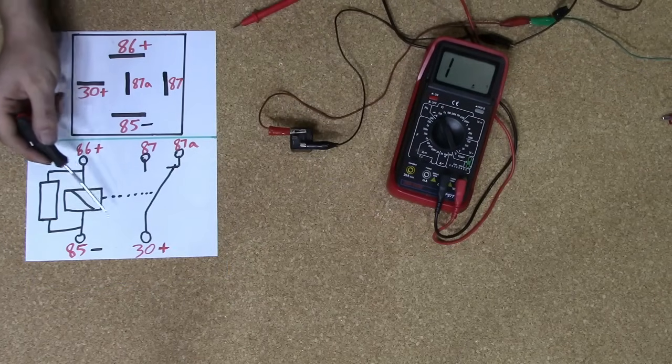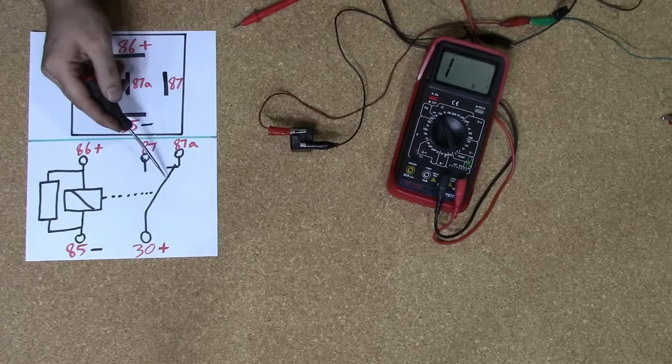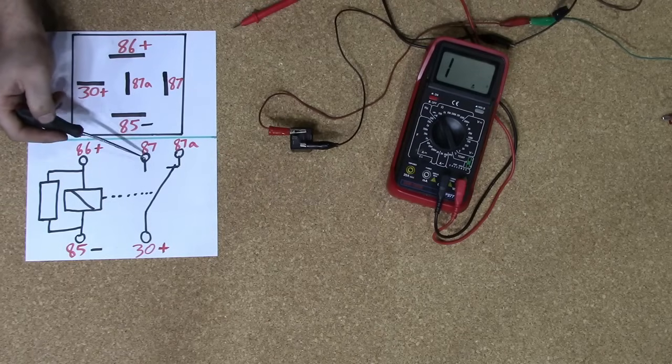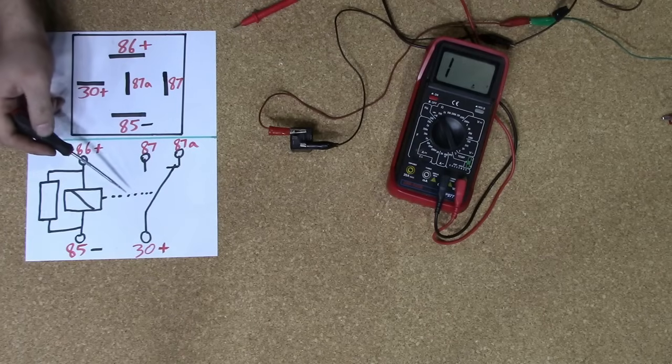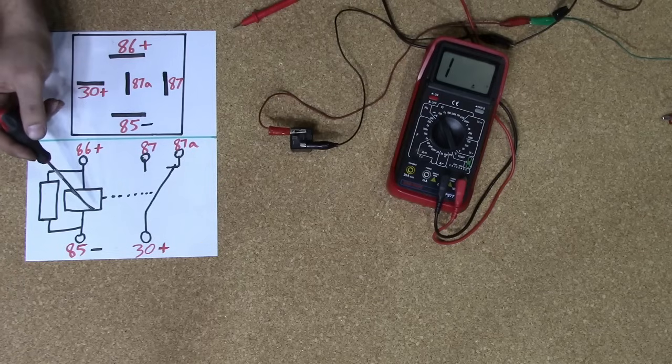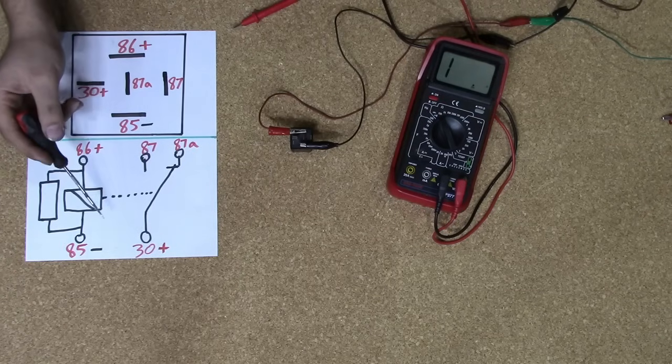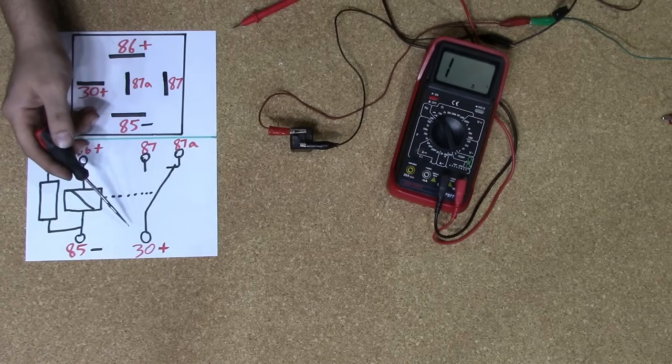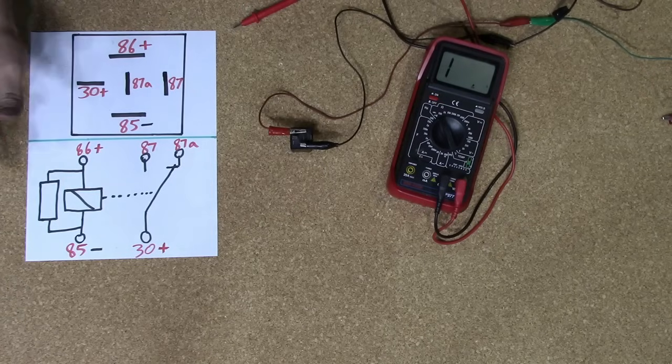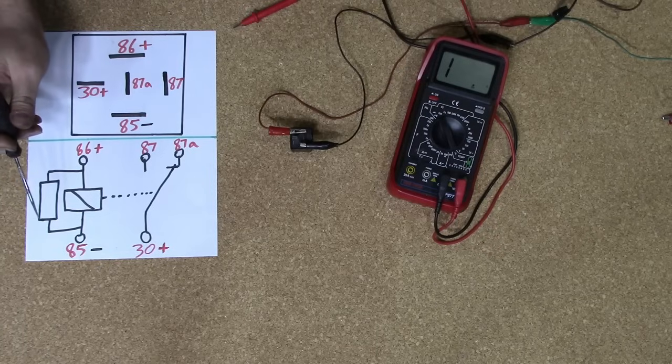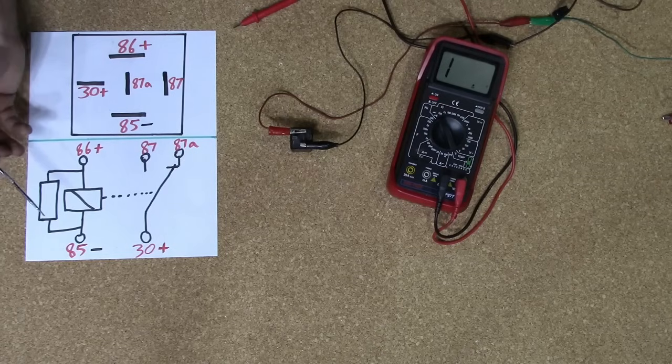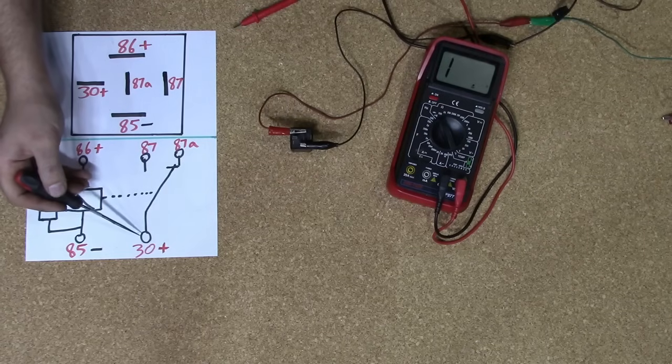What you want to do next is, after you activate the circuit and you hear the switch click, you want to measure the resistance between the 30 and 87 pin. Because the switch might work and it might click into place and most people would consider that a good relay after they hear the switch click. But you really need to be really thorough when you're testing relays. Because if you make a mistake and you consider a bad relay a good relay and you throw it back on the car, you can spend a lot of time diagnosing other issues which have nothing to do with anything. It was just a relay that you misdiagnosed.